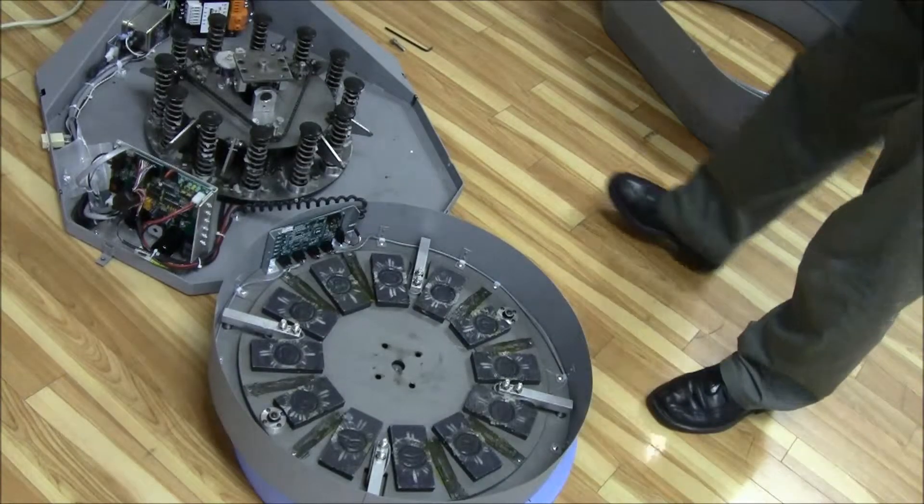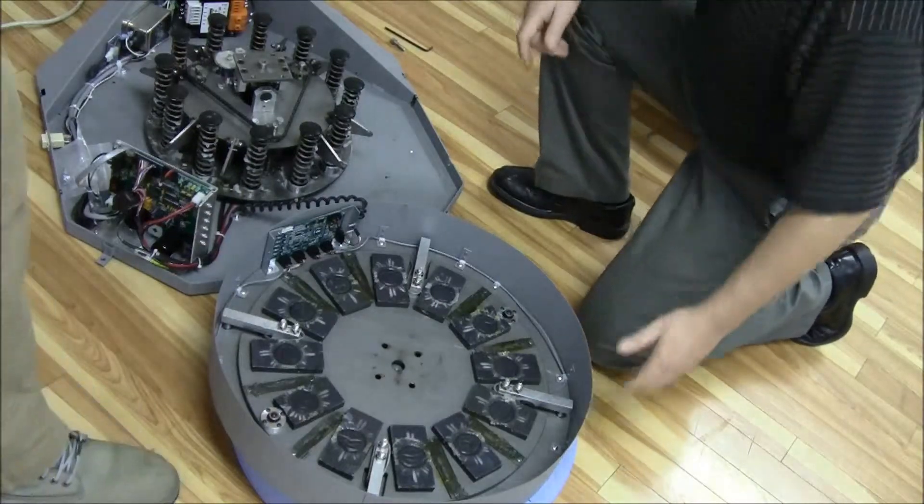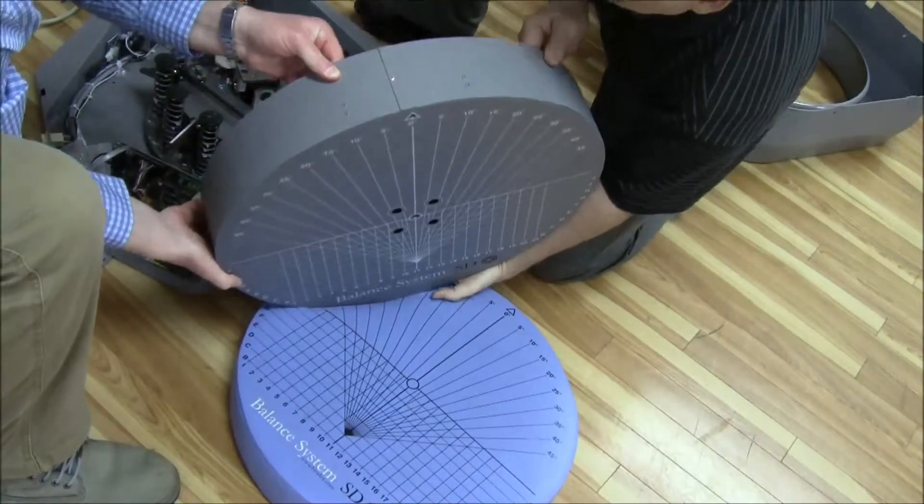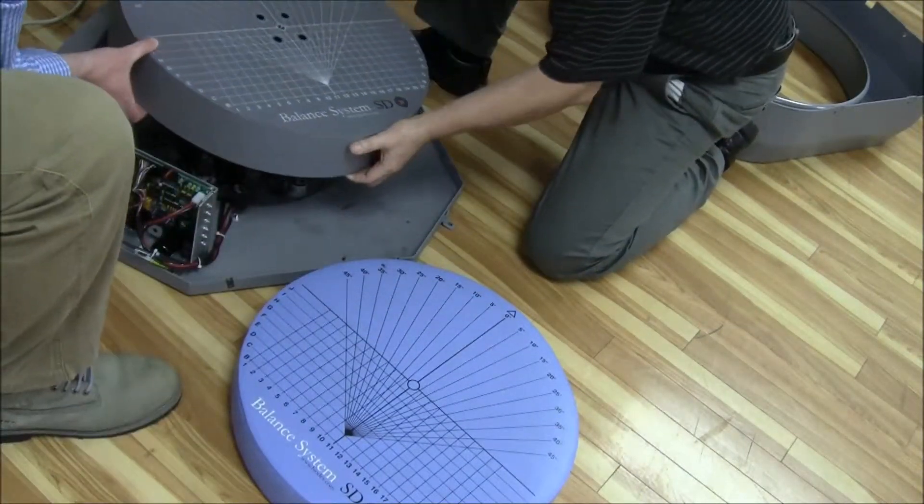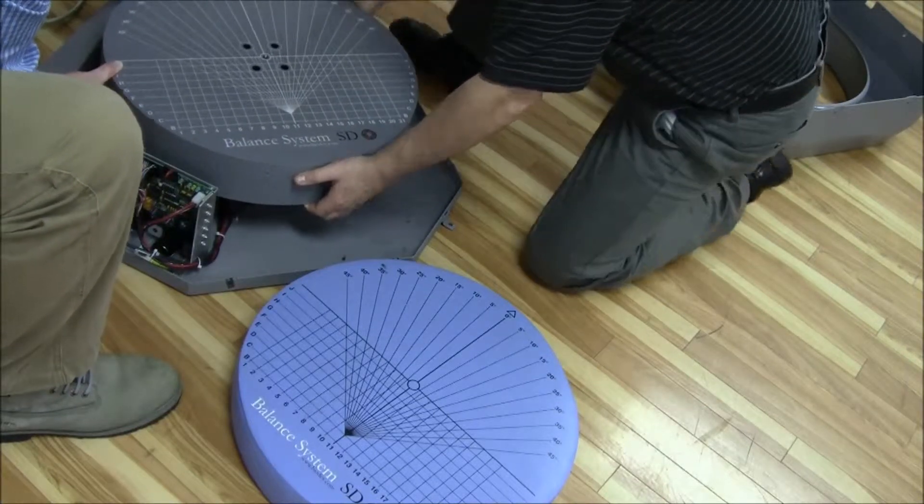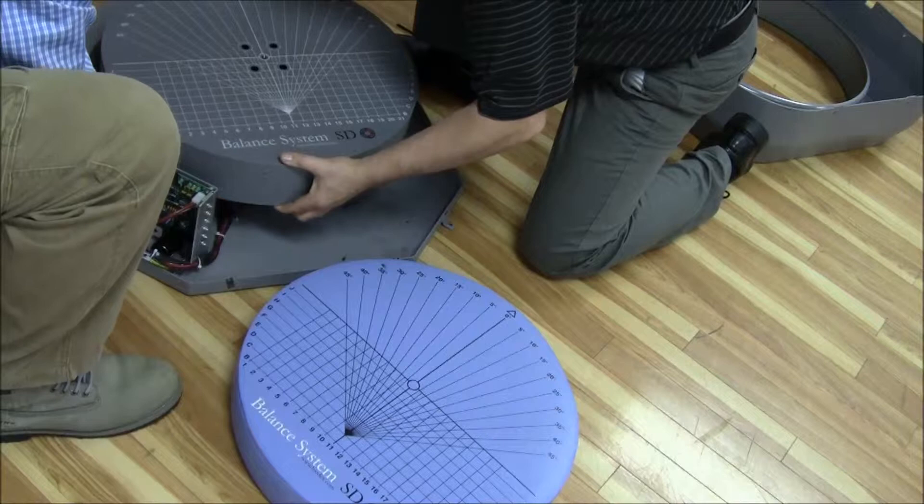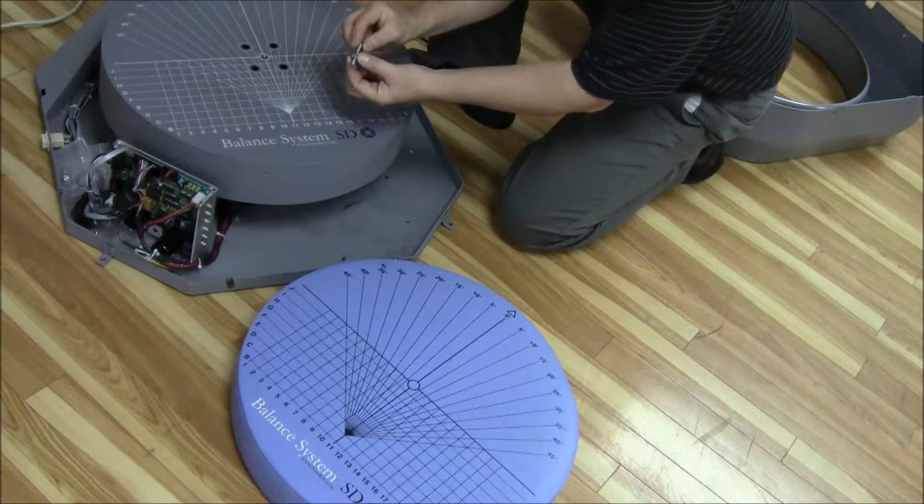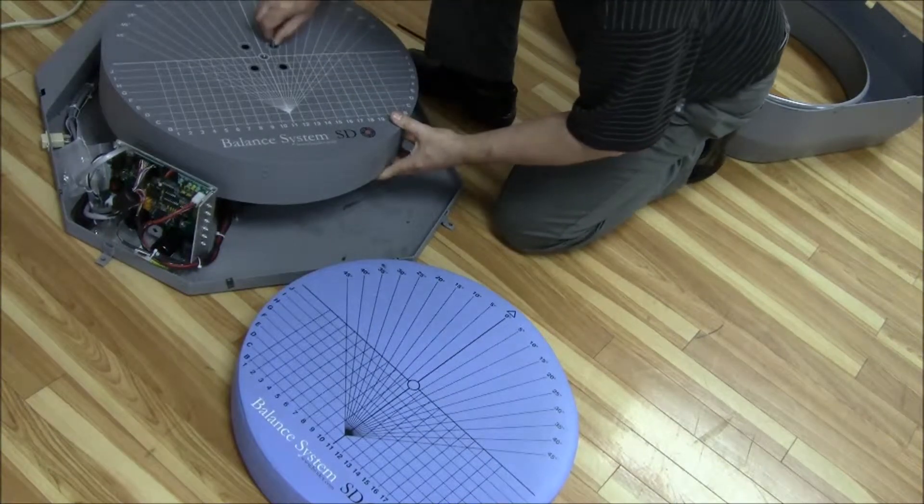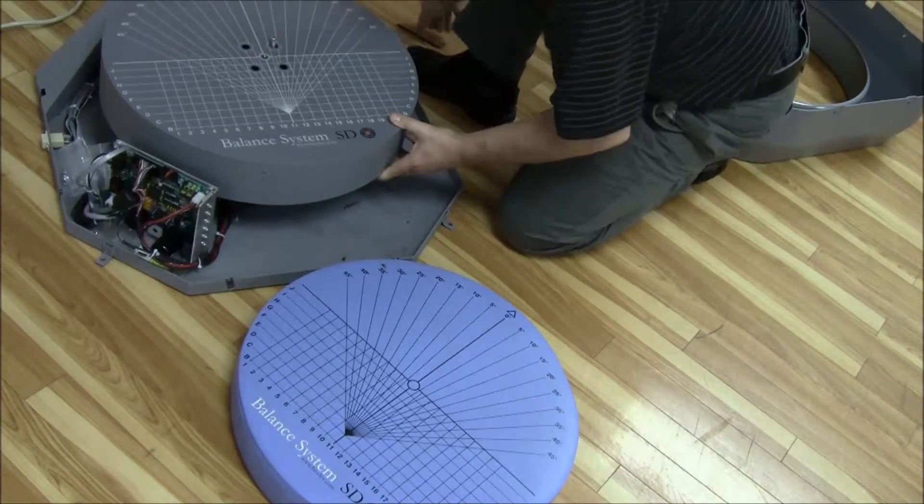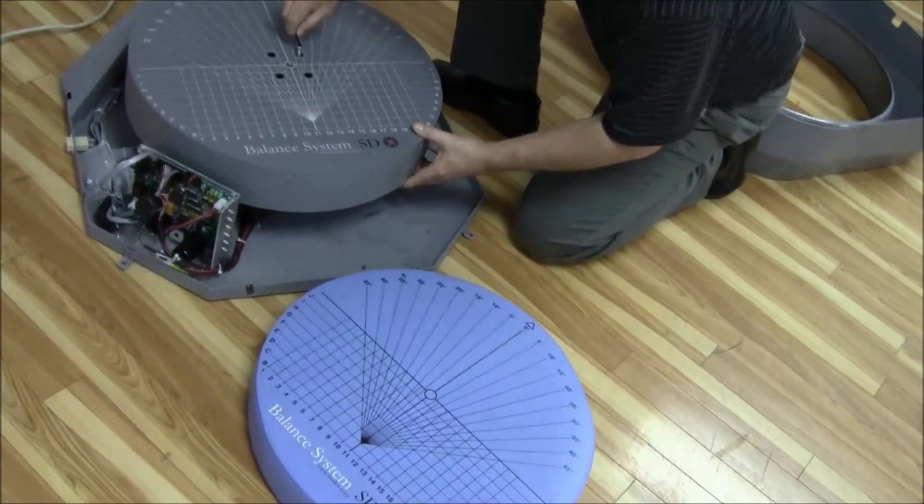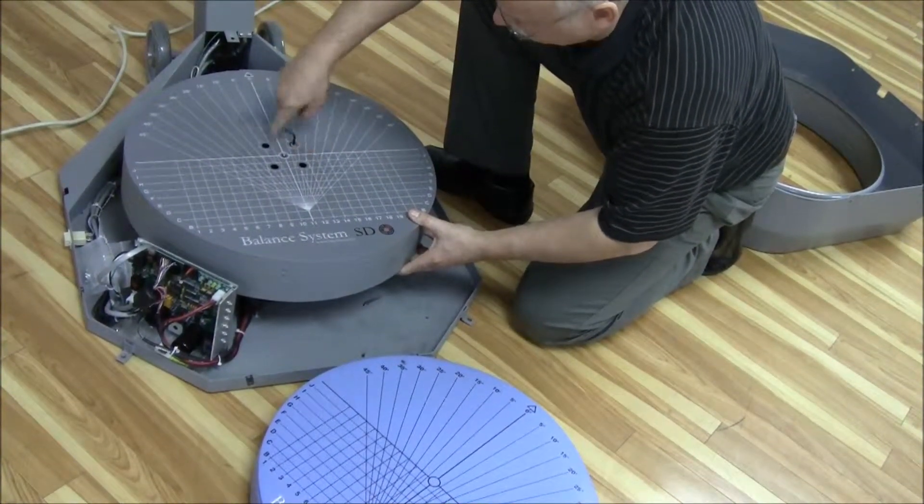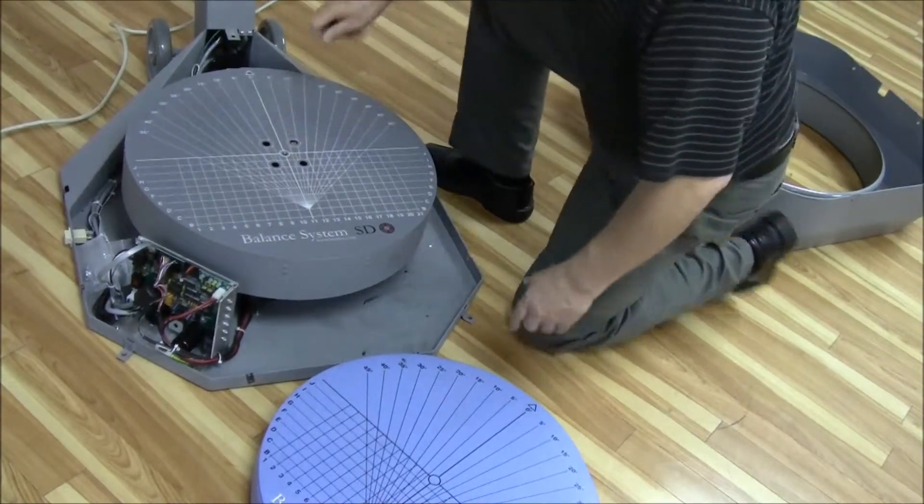Once the new strain gauge board is installed, we can take the platform and return it onto the balance machine. Carefully lift up, then position it onto the platform. We're going to make sure you have your washer and bolt. Replace each of the four bolts back into the platform. Once this is done, then you'll do a strain gauge calibration.